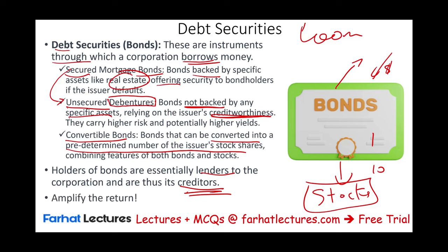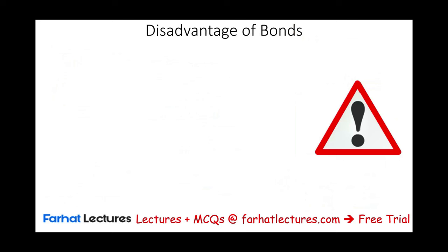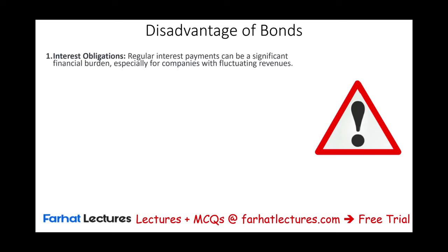Why do we borrow money? Borrowing money is to amplify the return. When you issue a bond, you pay, let's assume, six percent. You borrow this money and try to make eight percent. That difference is extra return to you — using other people's money to increase your return. Now, there are disadvantages of bonds. One is interest: you have to pay interest on a regular basis, which can be a significant financial burden regardless of whether the company is doing well or not.